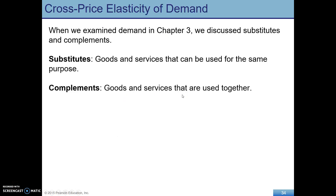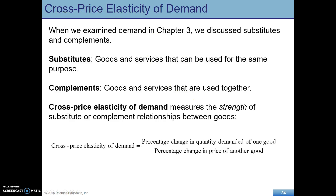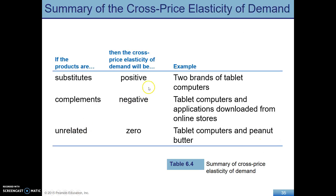Earlier we introduced briefly substitutes and complements, and we actually have a measure using another kind of elasticity — cross-price elasticity — to show whether goods are actually substitutes or complements. This is calculated the same way as price elasticity of demand, except now it's percentage change in quantity demanded of one good over percentage change in price of another good. For substitutes: if the price of one good rises and the goods are substitutes, quantity demanded of the other goes up, so you end up with a positive cross-price elasticity. It works the same way for complements, except you're going to get a negative number.